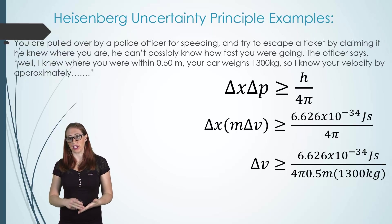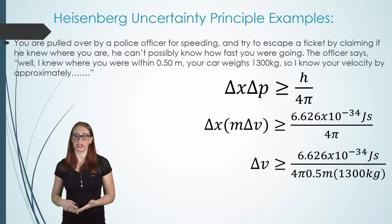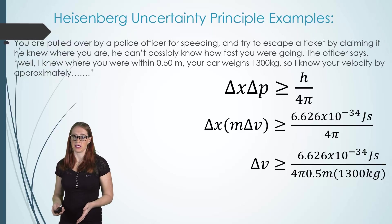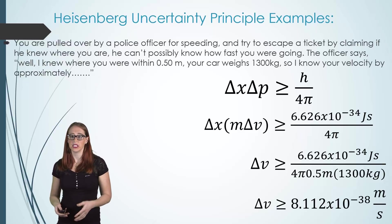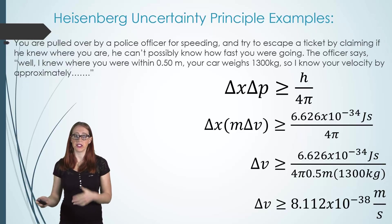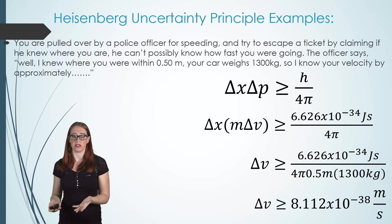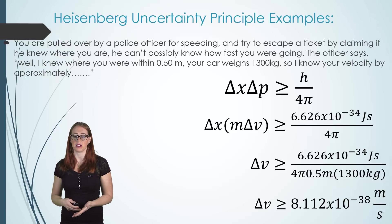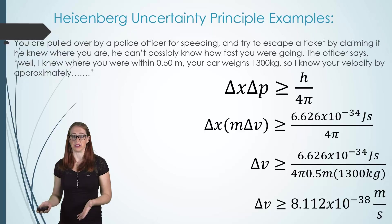We can fill in our values for x, for m, and solve for Δv. Once we solve for the delta v, we have our uncertainty in velocity. Take a look at this and consider the size of a car, and consider the size of the delta velocity, and consider the speed that you're going. And think about whether any of this Δv value would make a difference in your velocity.